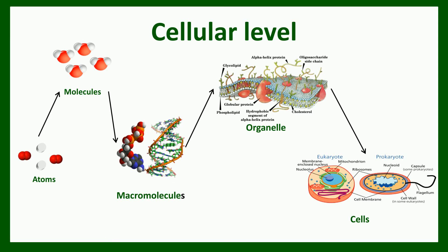If we ask what organelles like the plasma membrane are made up of — organelles are made up of macromolecules. Macromolecules are large molecules which are composed of thousands of covalently linked molecules. Examples include carbohydrates, lipids, proteins, and nucleic acids — all are macromolecules.